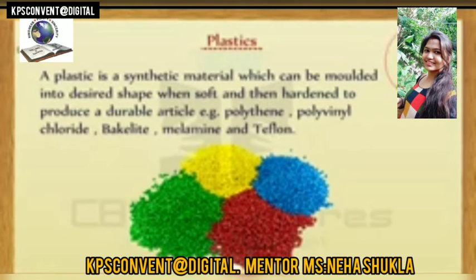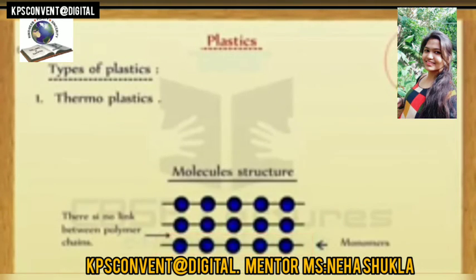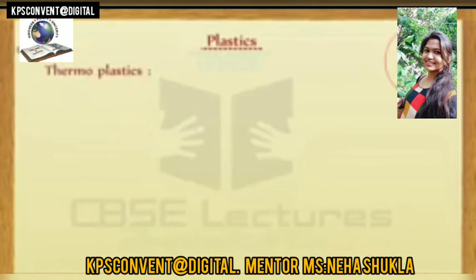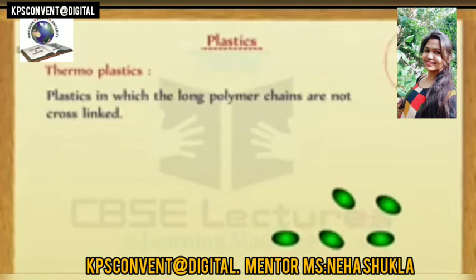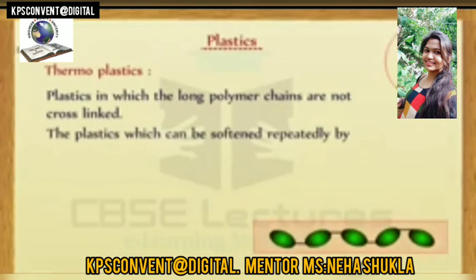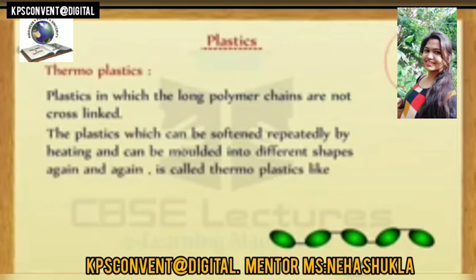When soft and then hardened, plastic produces a durable article. Examples include polythene, polyvinyl chloride, bakelite, melamine, and teflon. Types of plastics: there are two types of plastics — thermoplastics and thermosetting plastics. Thermoplastics: plastics in which the long polymer chains are not cross-linked. The plastics which can be softened repeatedly by heating and can be molded into different shapes again and again are called thermoplastics.